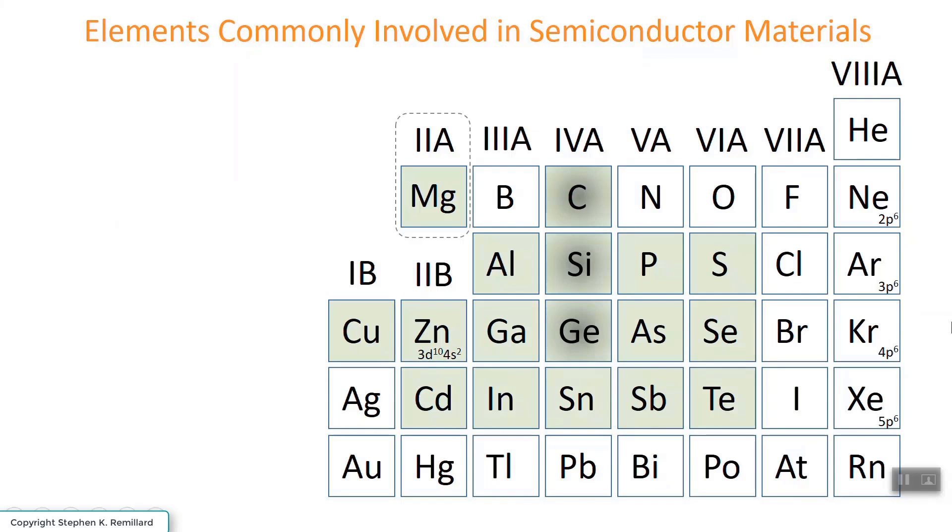The elements in green are the ones that are frequently involved in semiconductivity. It's not that the other ones are never involved; they might be there as dopants, for example, boron. The elements that are in groups 4 and 6 are semiconductors by themselves, such as carbon, silicon, germanium, tin, sulfur, selenium, and tellurium. Oxygen should probably be in a green box too, because it's involved in quite a few compound semiconductors.